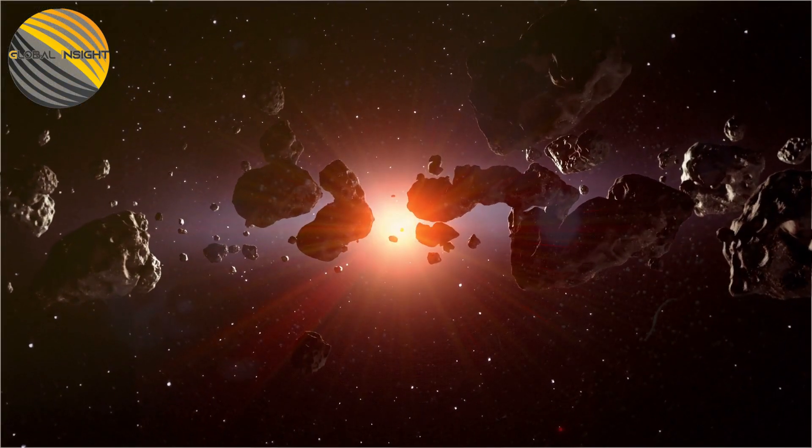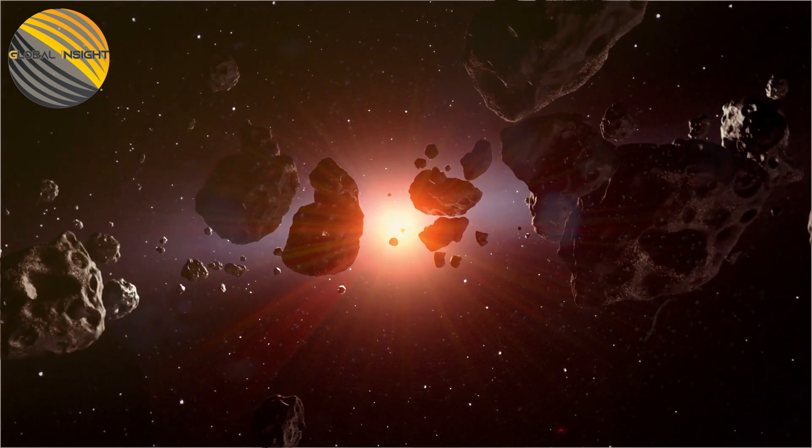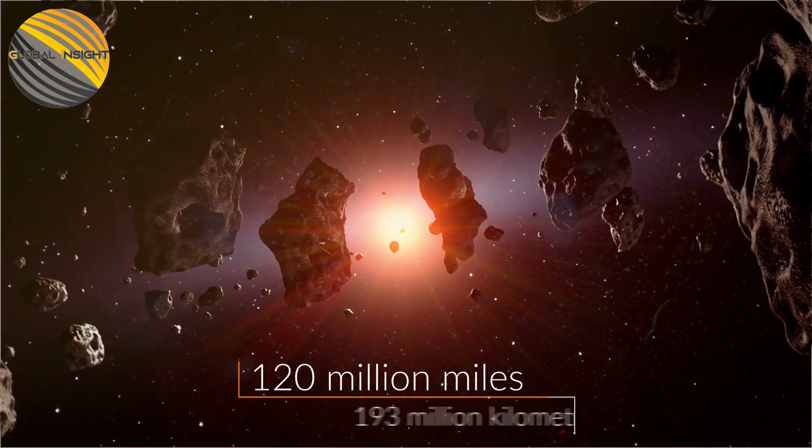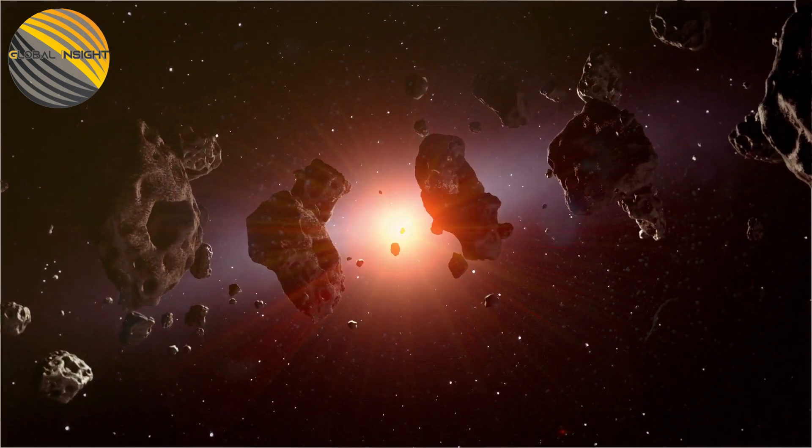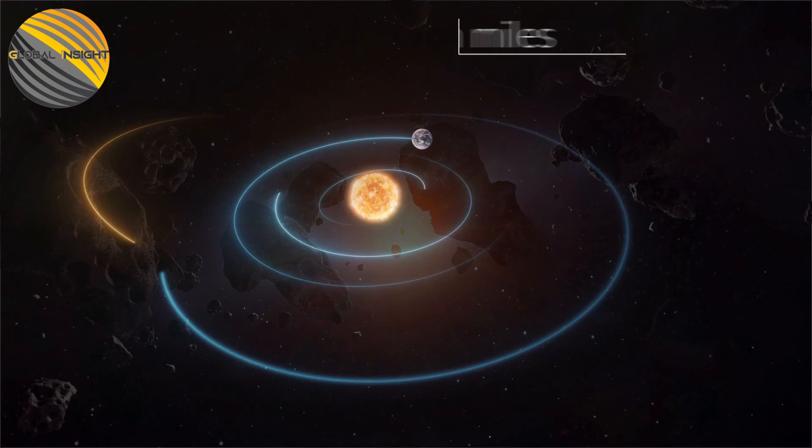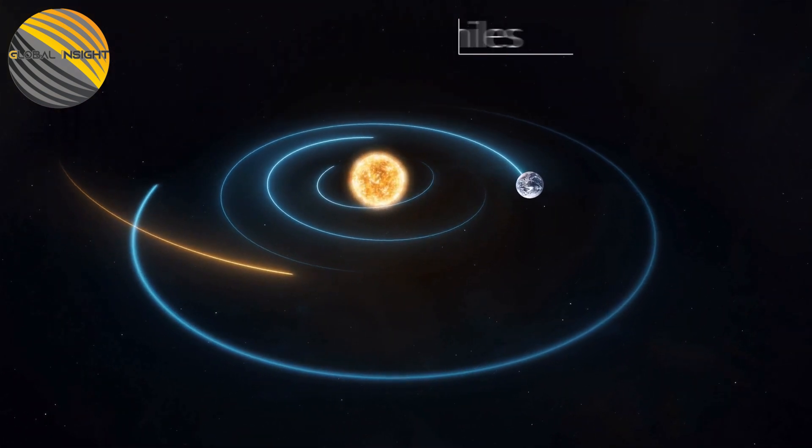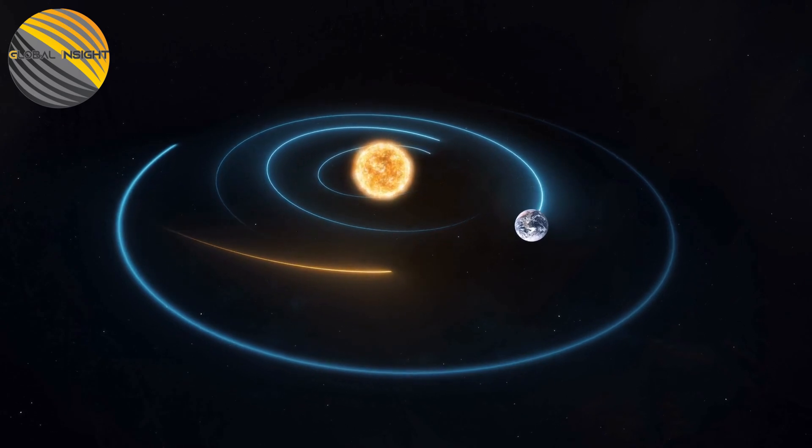Any space object that is within 120 million miles of Earth is considered a near-Earth object by the space agency, and any large body that is within 4.65 million miles of our planet is considered potentially hazardous.